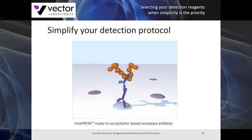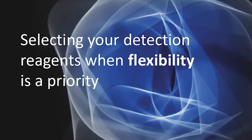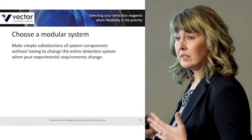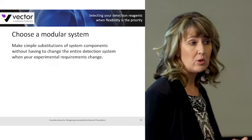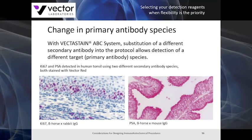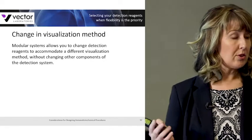Now we'll discuss selecting detection reagents when flexibility is a priority. Choose a modular system if the requirements in your laboratory are constantly changing, allowing you to easily substitute individual reagents without having to change the entire detection system. For example, if your primary antibody species changes, with the Vectastain ABC kit you can easily substitute in another secondary antibody. Ki67 prepared in rabbit is detected on the left, and PSA is detected on the right with a biotinylated horse anti-mouse, using the same ABC Vectastain kit and Vector Red substrate.